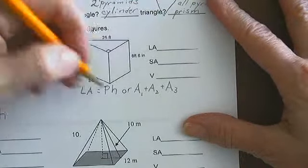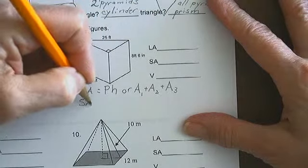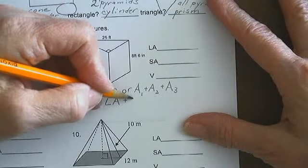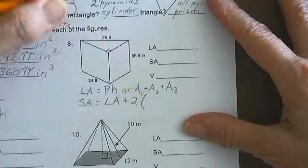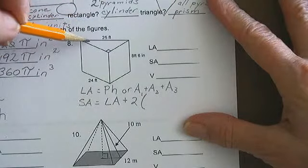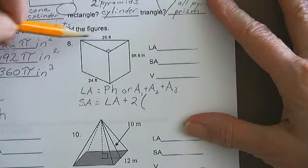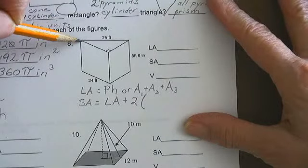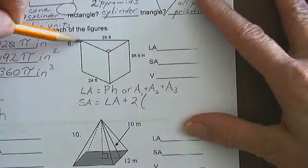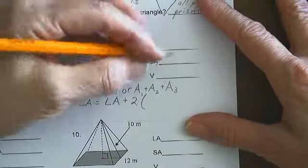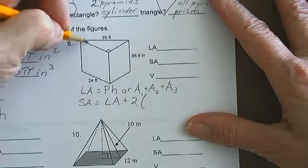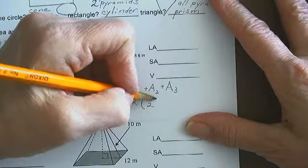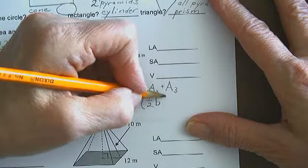Total surface area is equal to the lateral area plus 2 times the area of the base. Since we have a triangular prism, our base is a triangle, and the formula for area of a triangle is 1 half base times height.